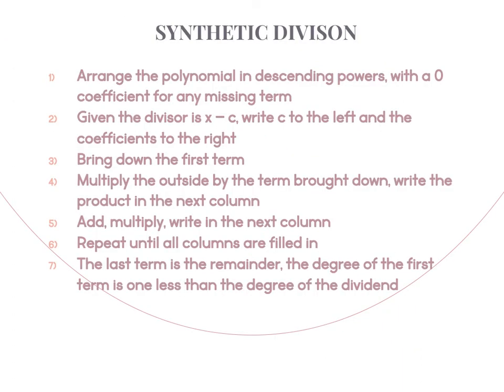Now for synthetic division — same as long division, you need to arrange your polynomial in descending order of powers and fill in any missing terms with zeros. When we do synthetic, it must be a binomial that you're dividing by. If it's a trinomial, we can't use synthetic. The divisor must be in the format of X minus C. We're not going to do our traditional division box — we're actually going to flip it upside down and make it look like the letter L. We'll only use coefficients. Bring down the first coefficient, multiply, write that product in the first column, add the column, and keep repeating.